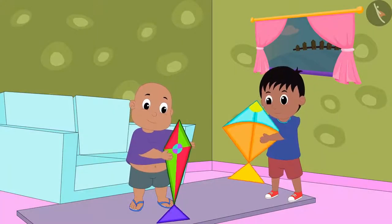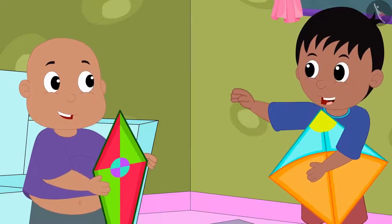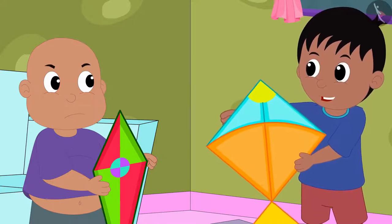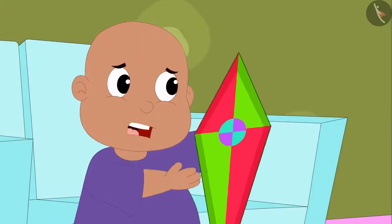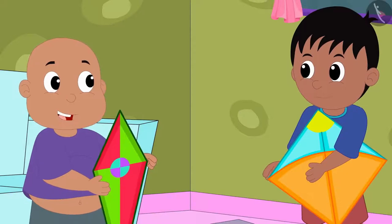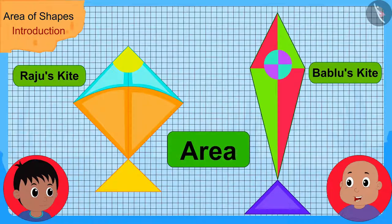Raju and Bablu have made kites. Bablu told Raju, showing his kite, 'Look how beautiful my kite is.' Raju replied, 'Yes, Bablu, your kite is really beautiful, but my kite is bigger than your kite.' Bablu responded, 'No, my kite is bigger than your kite and more beautiful as well.' Bablu then suggested, 'Let us draw outlines of both kites on a grid paper and find their areas. The one whose kite has a larger area will have the larger kite.'